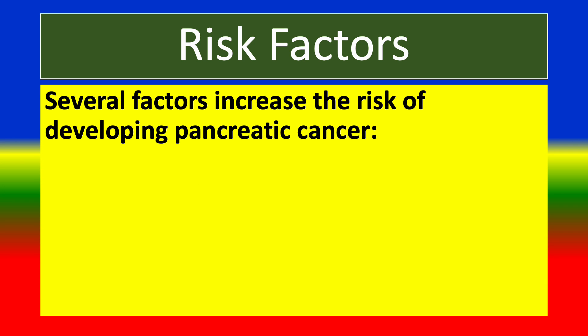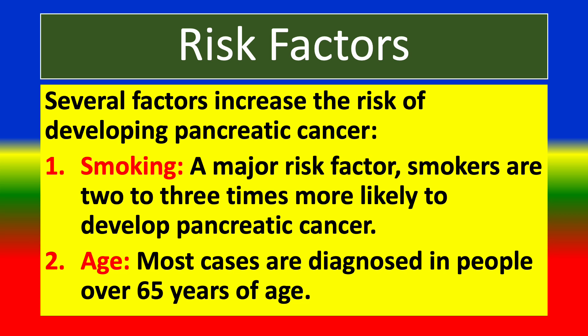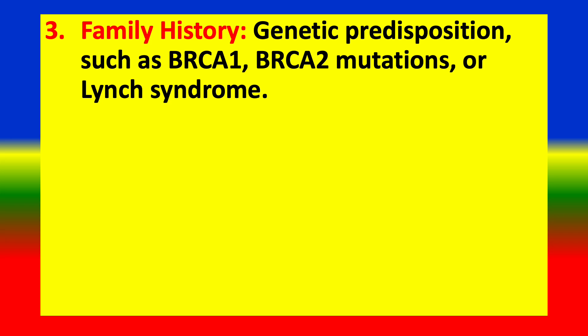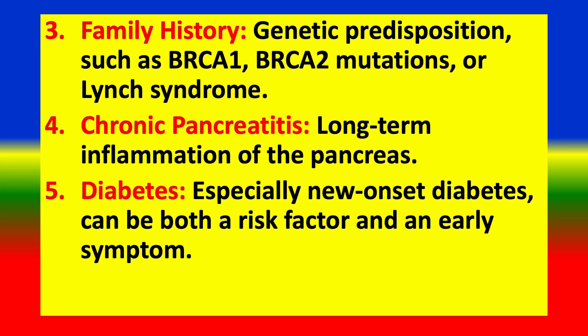Several factors increase the risk of developing pancreatic cancer. Smoking is a major risk factor — smokers are 2 to 3 times more likely to develop pancreatic cancer. Most cases are diagnosed in people over 65 years of age. Family history and genetic predispositions such as BRCA1 and BRCA2 mutations also increase risk. Chronic pancreatitis is another risk factor. Diabetes, especially new onset, can be both a risk factor and an early symptom.